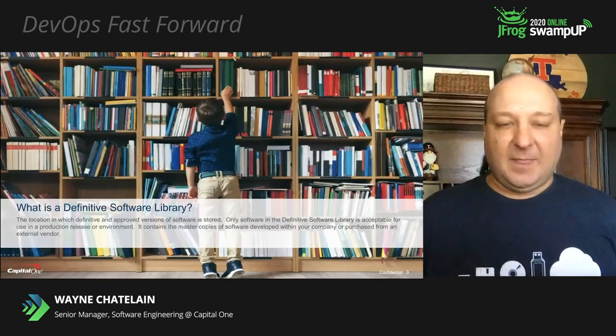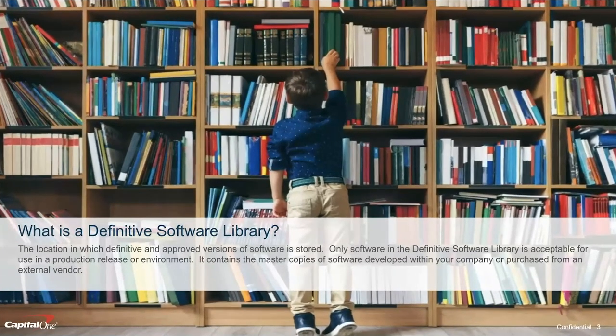So let's level set on what is a definitive software library. The library itself is a location where we're going to store approved versions of artifacts. These artifacts are going to be approved for a production release and approved for use in production environments. It's also going to contain all of the master copies of the software that is developed within your company or purchased from a third-party vendor to use in your company's software environments.